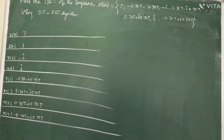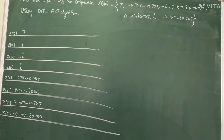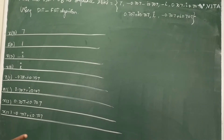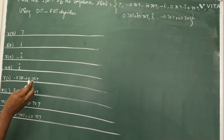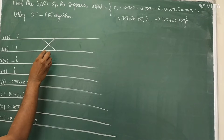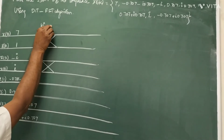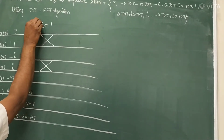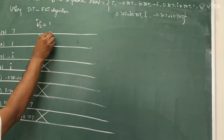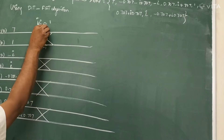As discussed in the last video, we have three stages to compute using the DIT-FFT algorithm. The procedure to compute DFT using DIT-FFT is the same; the only difference is we have to take the conjugate of the twiddle factor. In Stage 1, we compute the two-point DFT. The twiddle factor is W(0,2), whose value is 1. The conjugate of 1 is also 1. The upper end of the butterfly is addition and the lower end is subtraction.